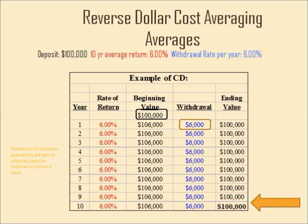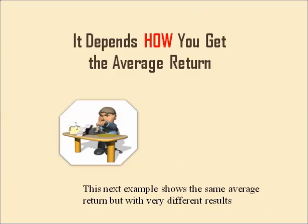Very simple and understandable. But let's take a look at what happens if we do it the next year — we get six percent interest, we take out six thousand dollars, and we still have an ending balance of a hundred thousand dollars. The concept here is that we can continue to do this forever as long as the interest rate stays at the six percent level. Now, it depends on how you average to get six percent — the next example is going to show you the same average return but with very different results.